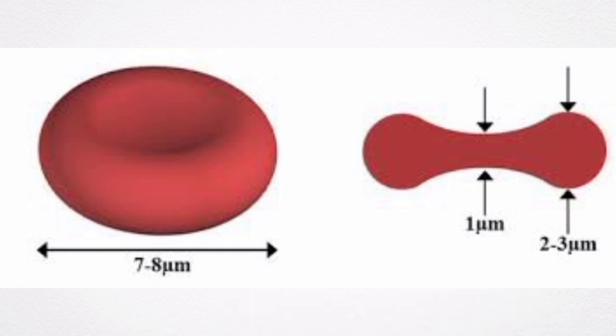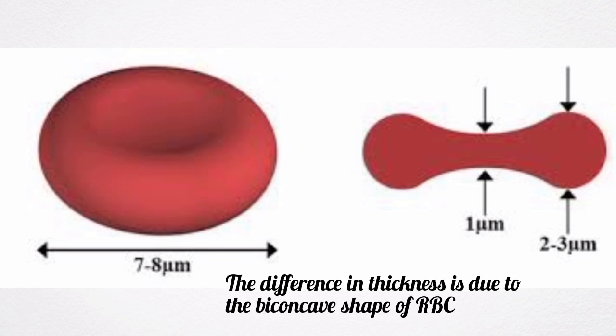The diameter of red blood cells is about 7.2 to 7.5 microns. In terms of thickness, at the periphery it is thicker with about 2.5 microns, and at the center it is about 1 micron. The difference in thickness is because of the biconcave shape of the red blood cell.